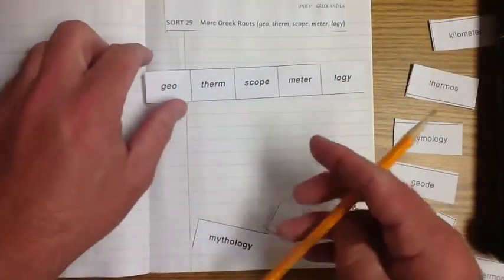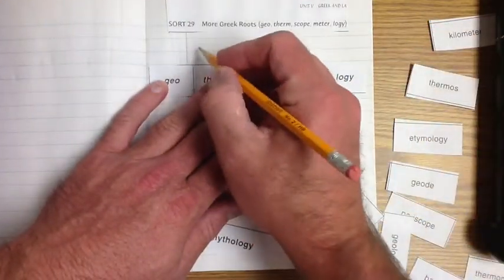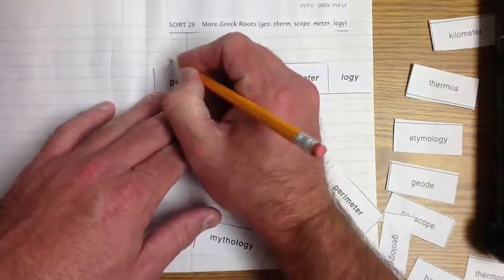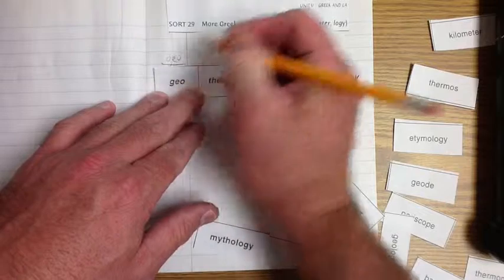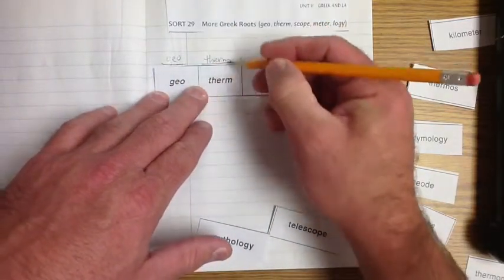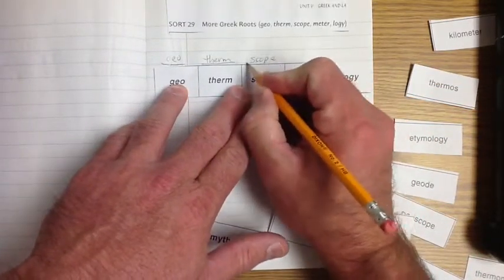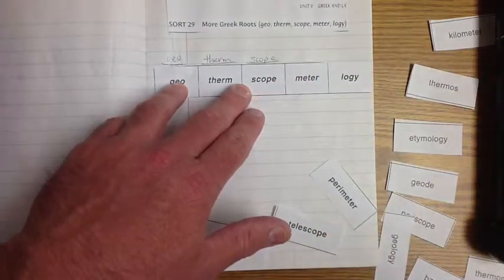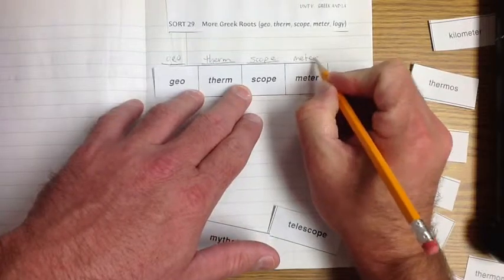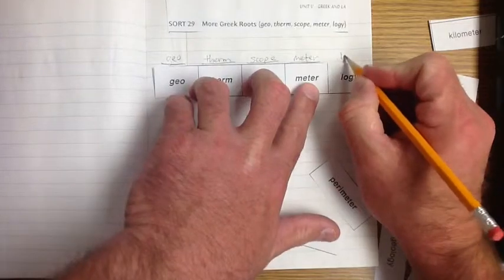What we got to do here is we're going to write these out. But remember what I always do is I like to leave a little space in here because that way we can write some meanings on these. So let's go geo, underline. Therm. This also gives you an idea of how big to write the letters also. Scope, and that's not the scope that you use in your mouth.